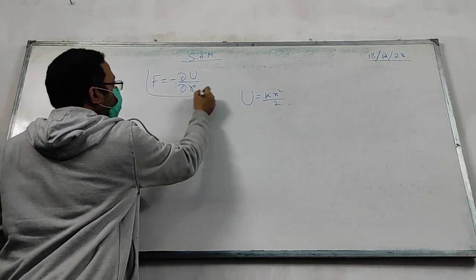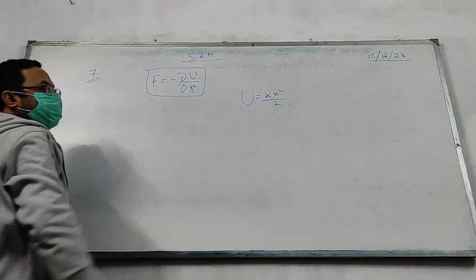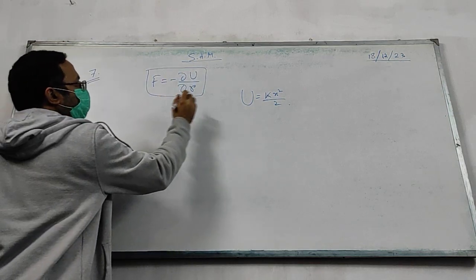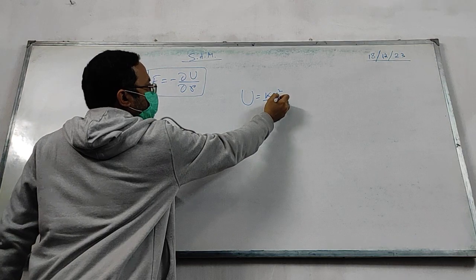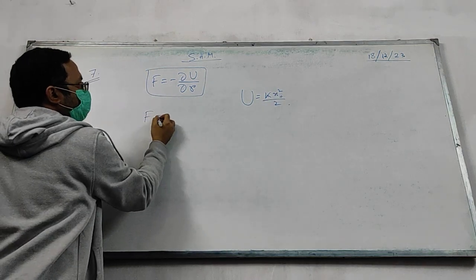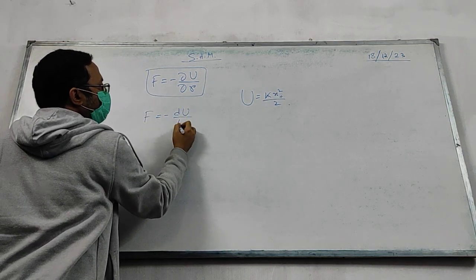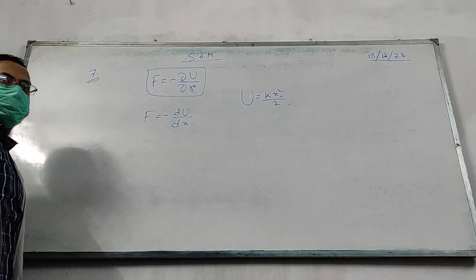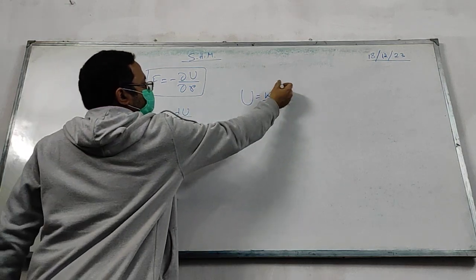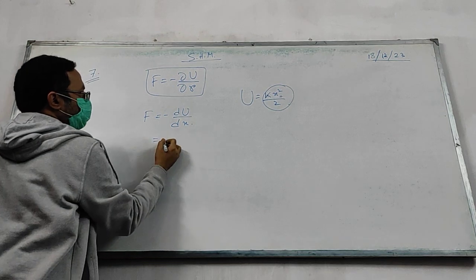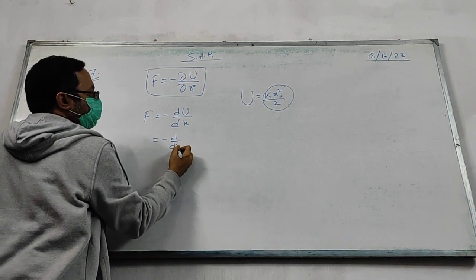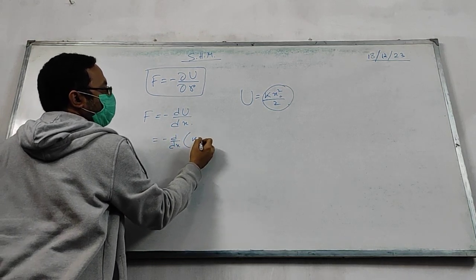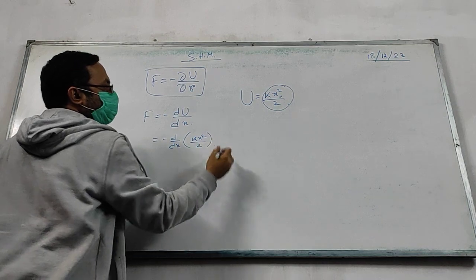So we know that the relation between force and potential energy is F equal to minus dU by dr. If we apply it only along single direction, you can also write F is equal to minus dU by dx. And what is u? This is the expression. So minus dU by dx of kx square by 2.